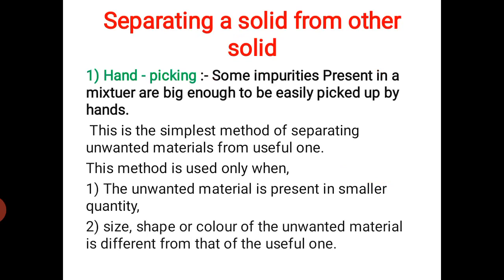The first method is handpicking. Some impurities present in a mixture are big enough to be easily picked up by hands. Whatever impurities — unwanted substances present in a mixture — that are big enough to be easily picked up by hands, that process is known as handpicking. This is the most common method of separating unwanted particles from useful ones, such as removing impurities from rice while cooking.